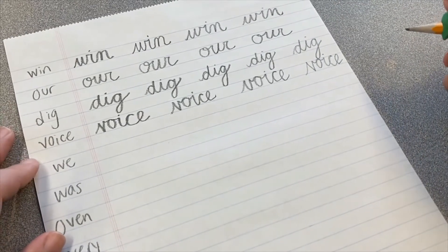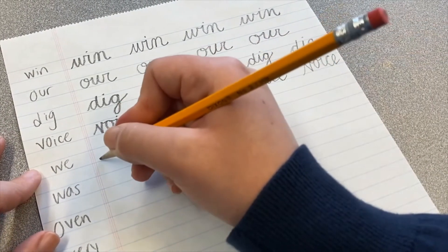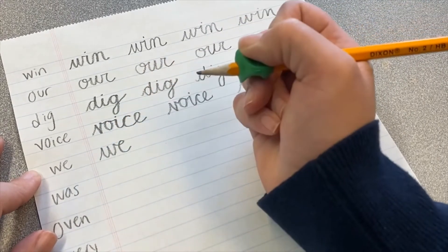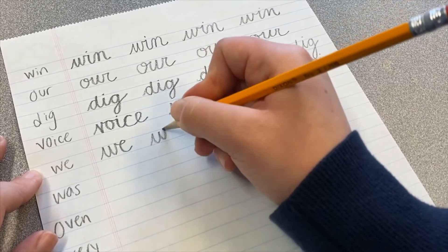Our next word is the word we, W-E. We've got W, and then it's right into the letter E.